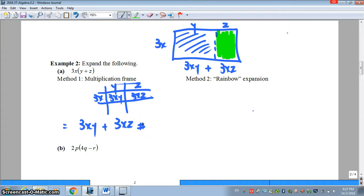That's method one using multiplication frame. Method two, you can make use of the rainbow expansion where you multiply term by term inside the bracket. So it looks like a rainbow. First, please multiply your 3x to y. And what will we get? 3xy.